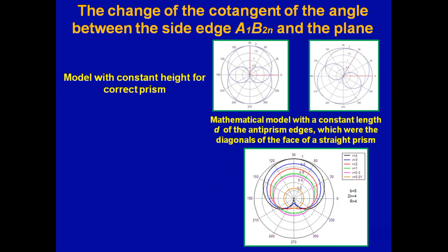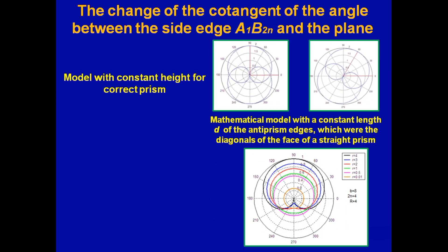We also investigated the cotangent of the angle between the diagonal and the base. Therefore, during the work, we investigated the characteristics of twisted anti-prisms that occur during large torsional deformation. Thank you for your attention!